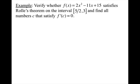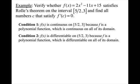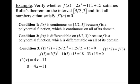Go ahead and try this example on your own. Verify all three conditions: continuous because it's a polynomial, differentiable because it's a polynomial. Condition 3: plug in 5/2 — you get zero; plug in 3 — you also get zero. So the endpoints have the same y-value. Take the derivative, set it equal to zero, find x. At this x value you have a horizontal tangent line within the interval that is parallel to the secant line.